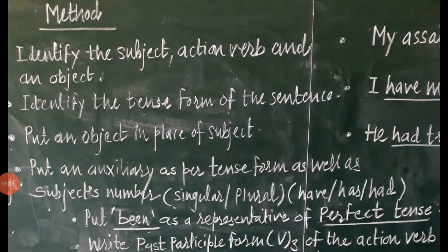Dear students, this is the methodology which we have been continuously applying. A few points we are already familiar with: identifying the subject, action verb, and object — this is usual practice while preparing any sentence into passive construction. Then identify the tense form, which is very important. Once you identify the tense form, your possibility of an error is almost zero.